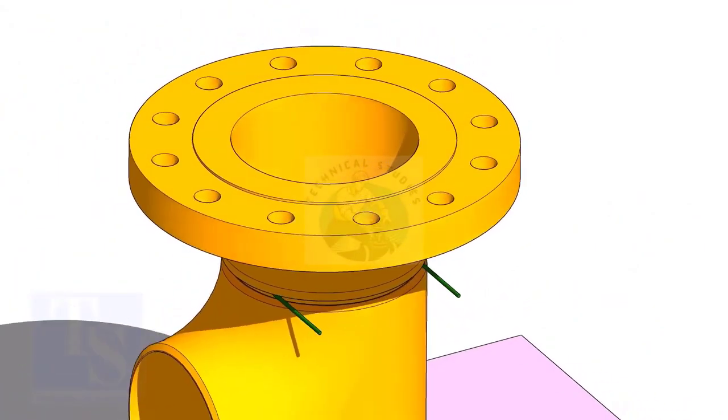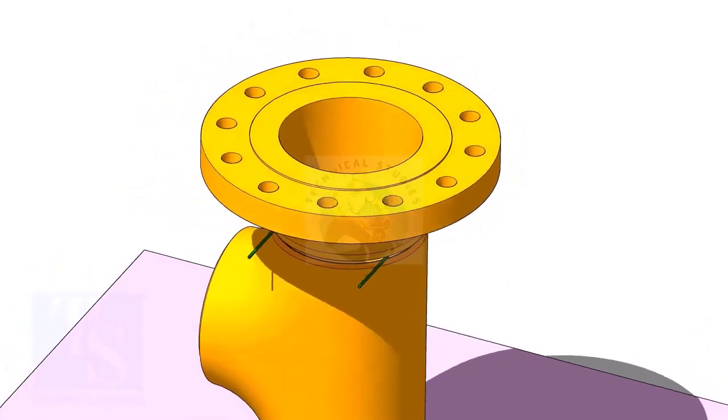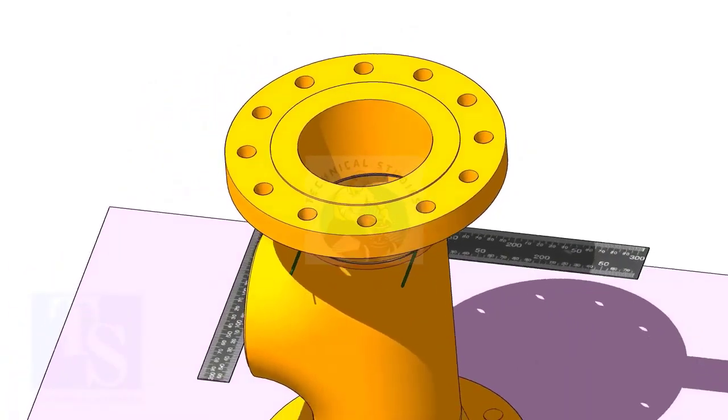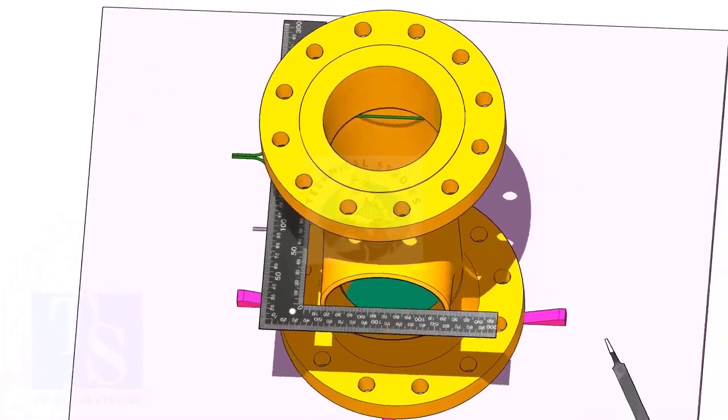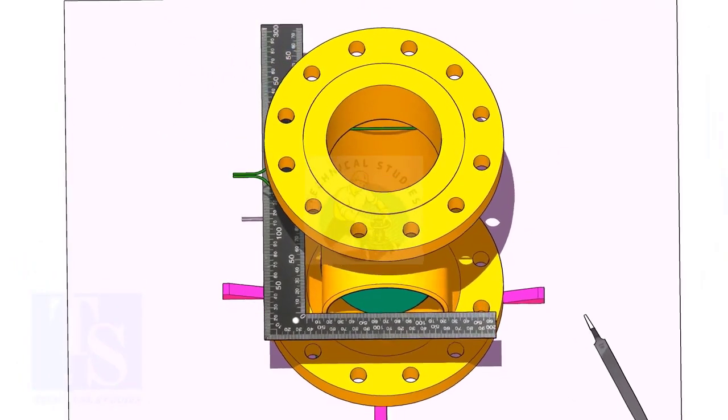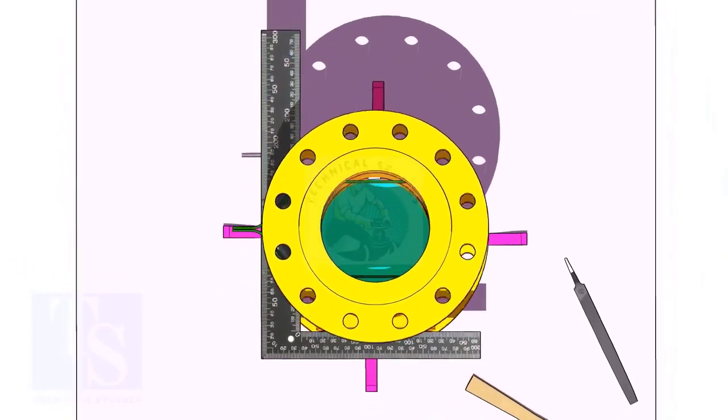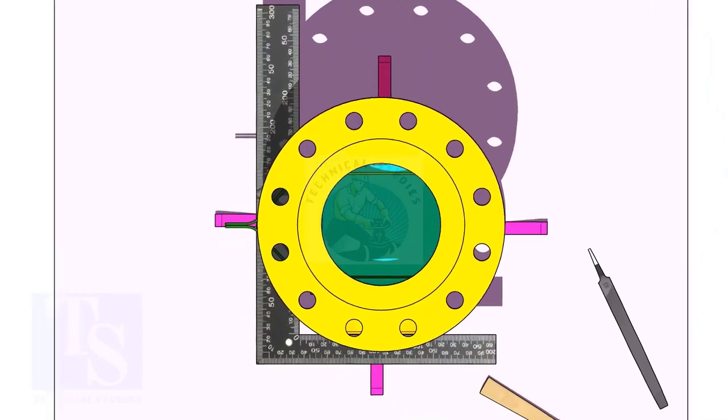Put the flange on the top side of the tee. Correct the hole center of the flange and the face of the tee, as shown. Correct the overlap.